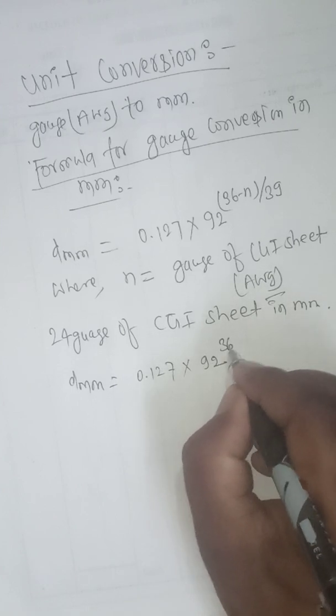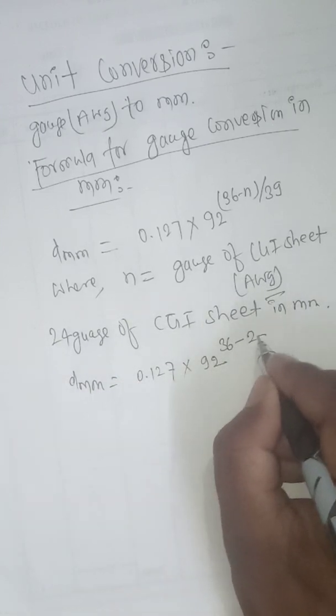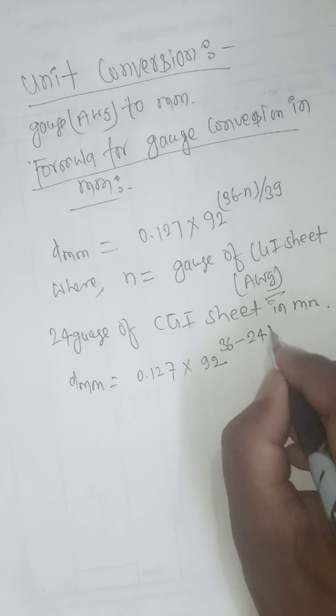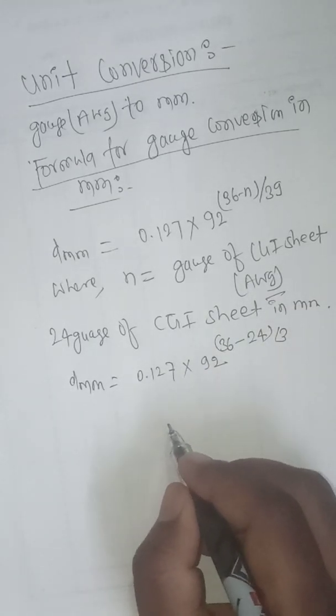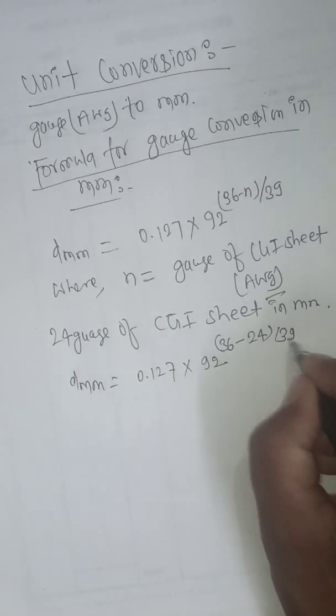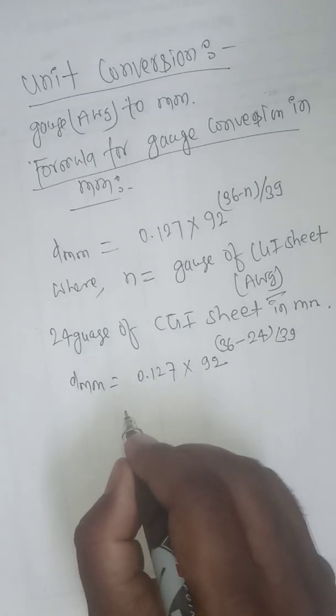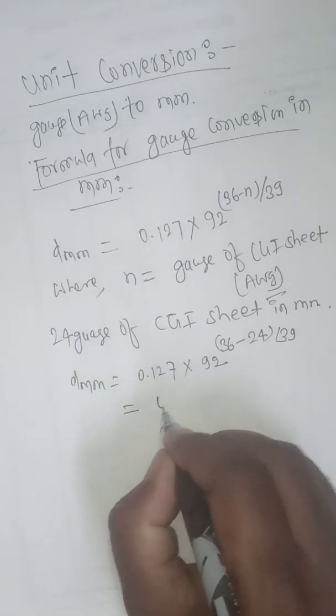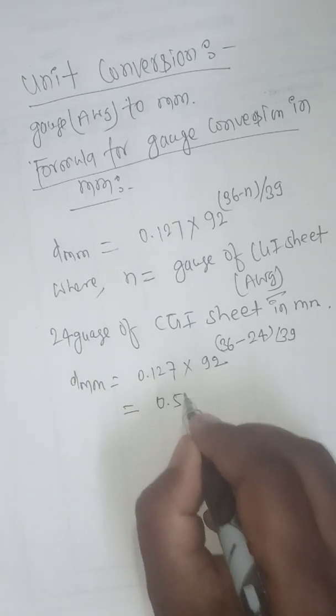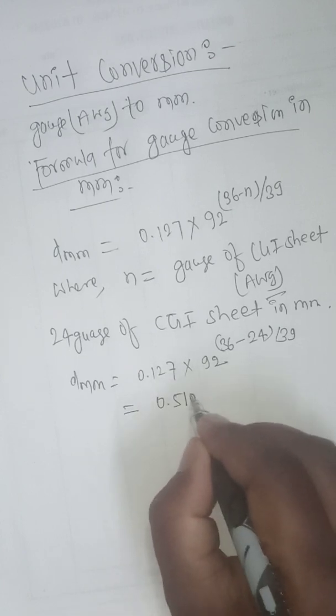92 minus 24, 24 by 39. We can calculate the value, d is equal to 0.5105 mm.